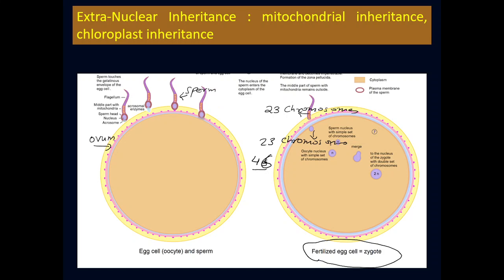What is worth mentioning in today's lecture — and what we will discuss — is extra nuclear inheritance. This picture shows where the fusion of sperm and ovum begins life: from one single cell stage, it produces two-cell stage, then four, eight, sixteen, and so on.